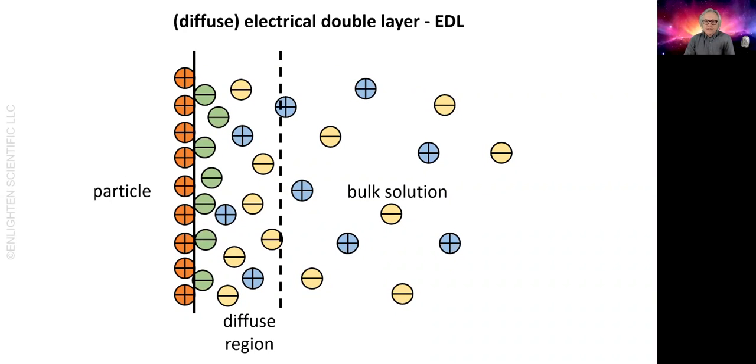There's a transition from the diffuse layer with an excess of counter ions to the bulk solution with a uniform concentration of ions. Very close to the particle, material is either adsorbed or strongly associated with the particle such that it remains with the particle when it moves relative to the liquid. The transition point between bound and free liquid is called the shear or slipping plane.